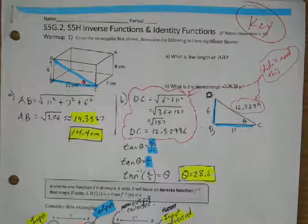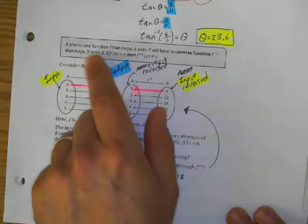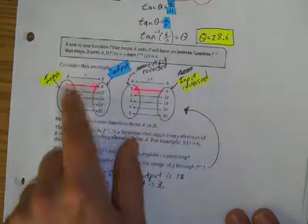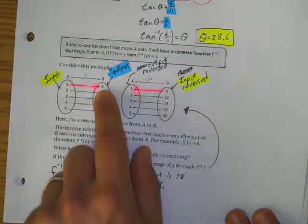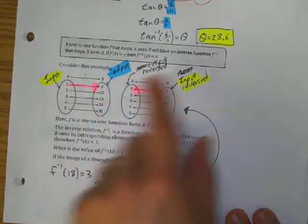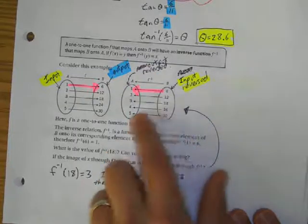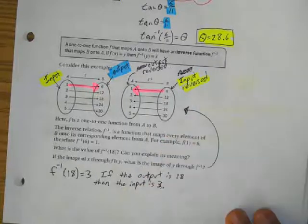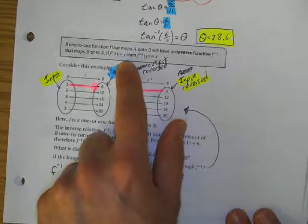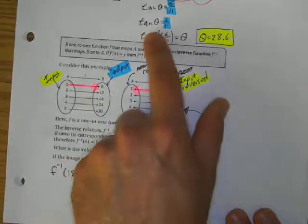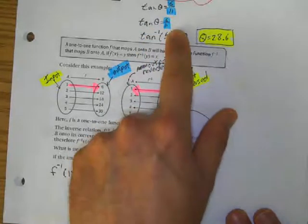That inverse tangent example is good because it helps us with what we're going to be doing — inverse functions. If I have a function where all inputs lead to an output, and each input goes to exactly one output, it's a function. If I can reverse it so each output maps to exactly one input, then the inverse is also a function. Basically, if f(x) = y, then the inverse of y equals x — we switch the input and output values, which is exactly what we did with inverse tangent.